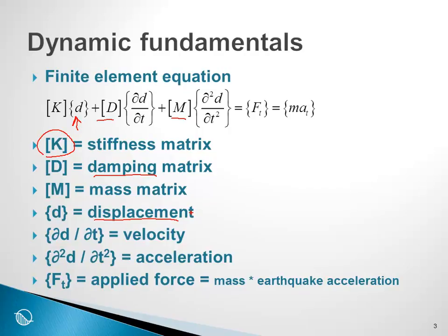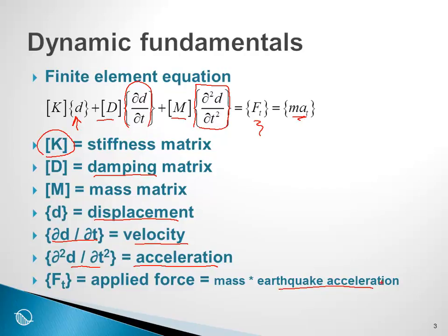We have damping times velocity — the change of displacement with time is the velocity. Then we have the rate of change of displacement with time, which is the acceleration. So we have stiffness, damping, and mass matrix. All of this is driven by a force on the right-hand side of the equation. In the QuakeW formulation, the force is the mass times the earthquake acceleration, which is the applied driving force for the equation.